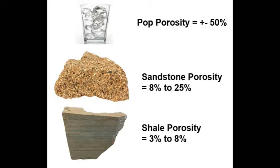The porosity of ice cubes may be as much as 50%. A typical sandstone has porosity ranging from 8 to 25%, and a shale has porosity from only 3 to 8%. That may not sound like much pore space, but if a shale is a thousand feet thick, covering hundreds of miles, you can cram a lot of hydrocarbons into that little bitty living space.